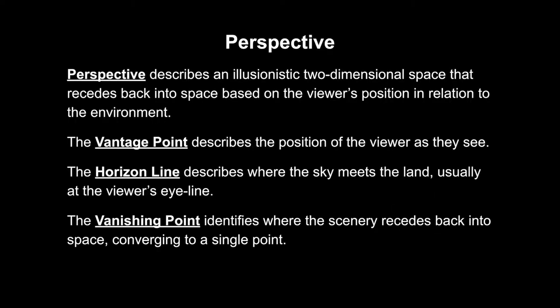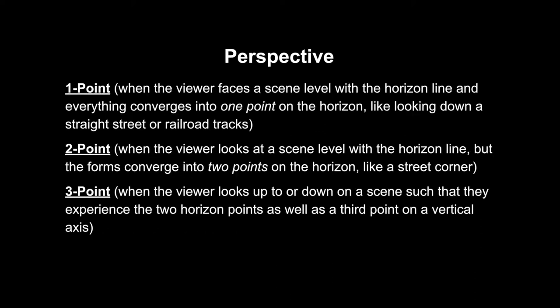Another way of establishing depth and space in the pictorial plane is using perspective — creating the illusion of three-dimensional space as things recede backward on the two-dimensional plane. The vantage point is where the viewer is in relation to the scene. The horizon line is where the sky meets the land, usually at about the viewer's eye line. The vanishing points are where everything in space seems to converge into a singular point. In one-point perspective, everything converges to one point — a good example is looking down railroad tracks, a street, a hallway, or a room from the center of one wall.